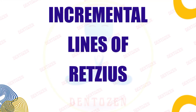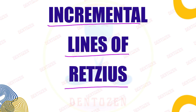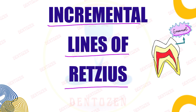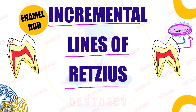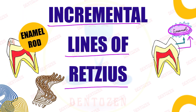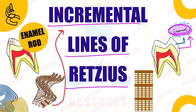Welcome back to Genderson. Today we have a new video on incremental lines of Retzius seen in enamel. We are continuing our lectures on enamel, which is the outermost layer of the tooth and is made up of enamel rods. Enamel rods form in increments — one part is formed, then there is a break or line, another part is formed, then another line. These lines are known as incremental lines of Retzius, which under the microscope appear as brownish bands separating the increments of enamel.